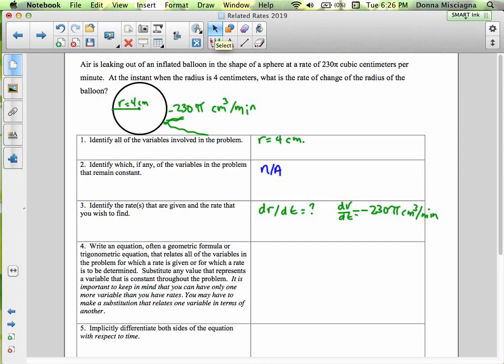Write an equation, often a geometric formula or trigonometric equation, that relates all the variables in the problem for which the rate is given or for which the rate is to be determined. So our equation here is the volume of a sphere. Volume equals four-thirds pi r cubed.